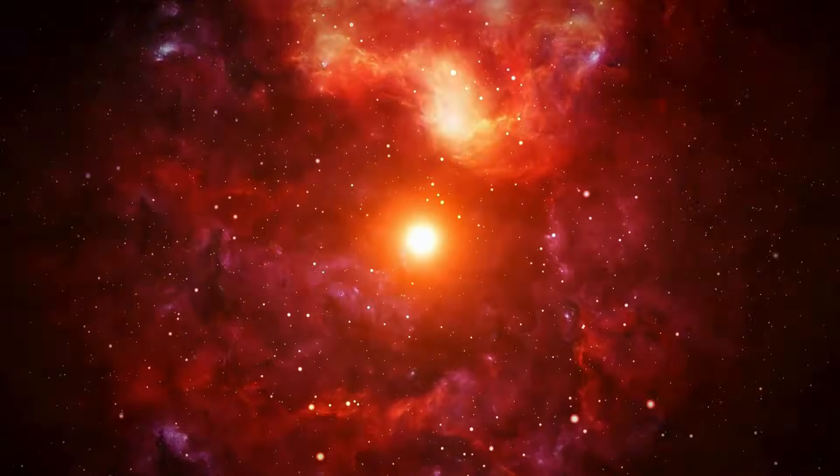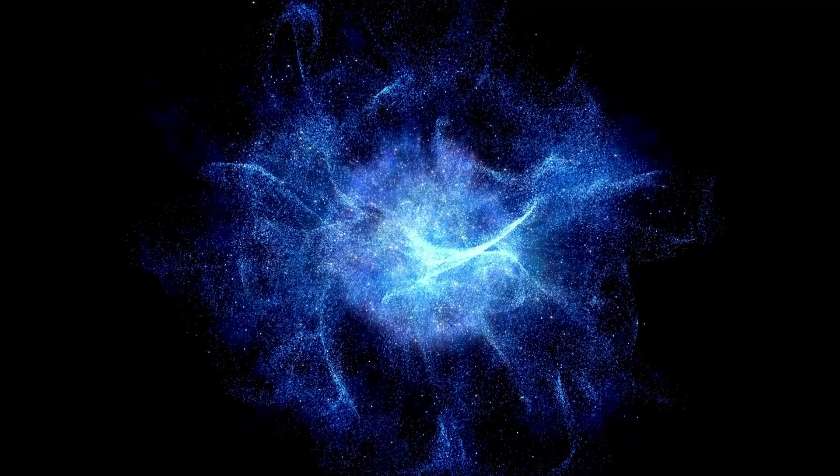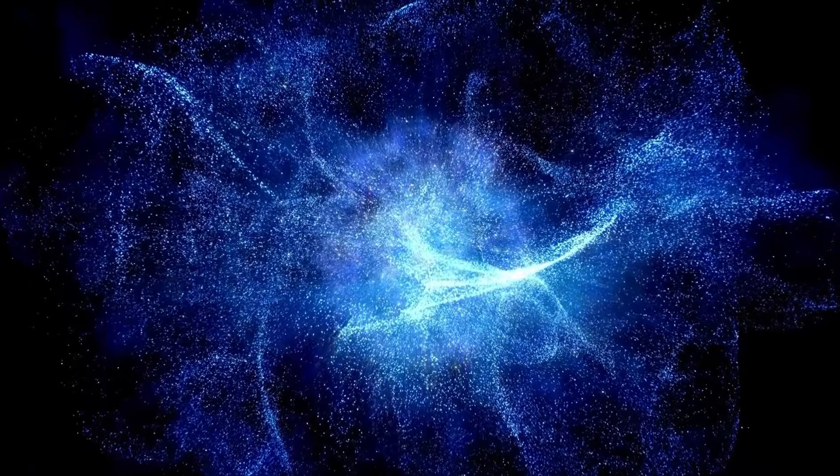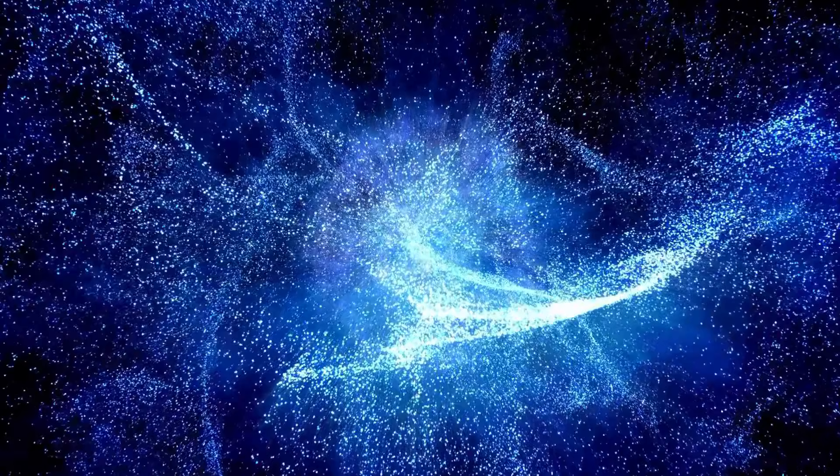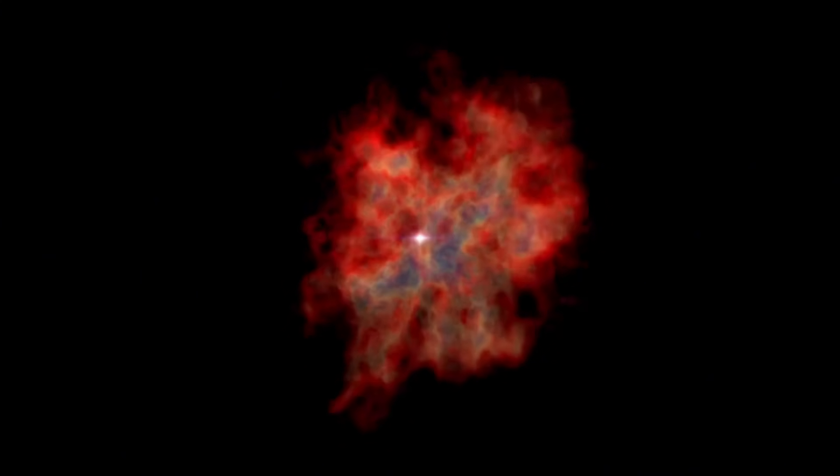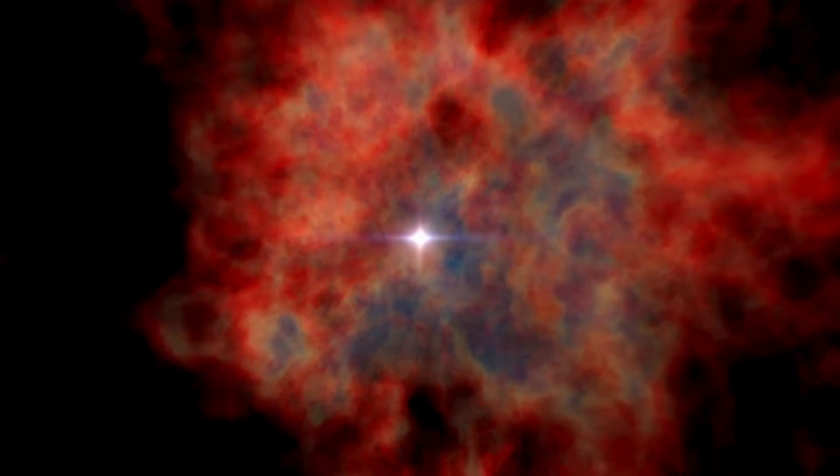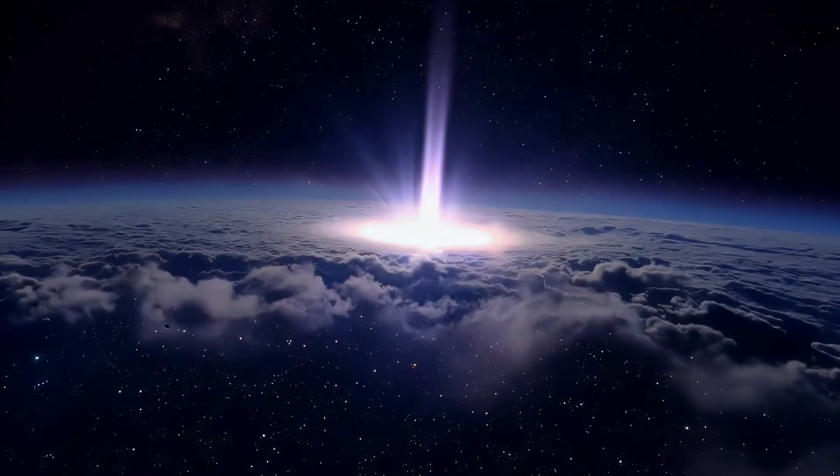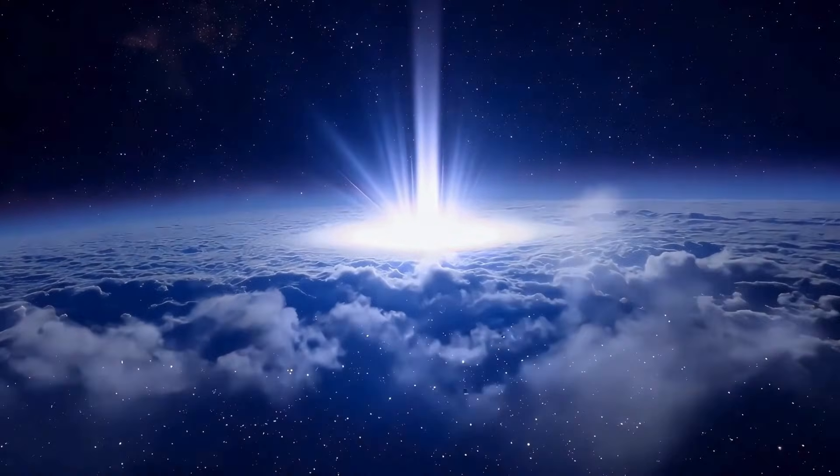As Betelgeuse approaches the end of its life cycle, its sheer size is evident. It is roughly 1,000 times larger than the sun, so large that if it replaced the sun, its outer layers would stretch far beyond the orbit of Mars, swallowing Mercury, Venus, Earth, and Mars in the process. This tremendous size reflects its current state and its position in the stellar evolutionary process.